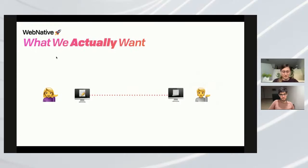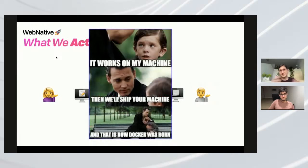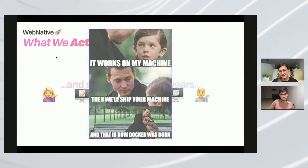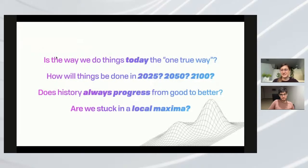Really what we want to do is create content — a website, a web app, a post, a picture — and just share it with other people. With software especially, if you want to share it with somebody, the answer today is: containerize it, ship it, and hopefully they know how to run a Docker container. This is literally the internet we have today, which is fantastic. But is this the one true way? Will things look like this in 50 or 100 years? Probably not — we've only been doing this for 30 years, a blip in historical time.